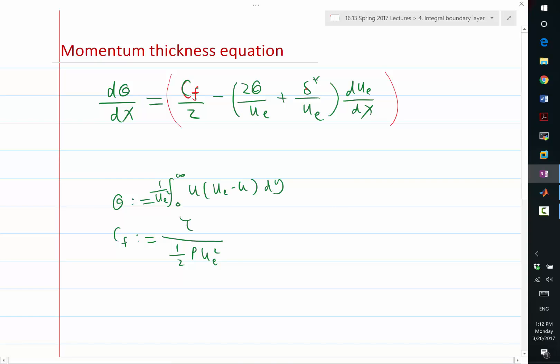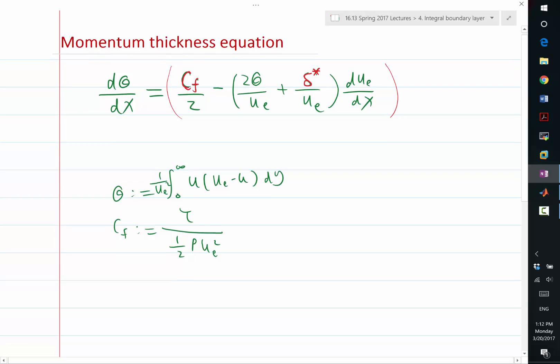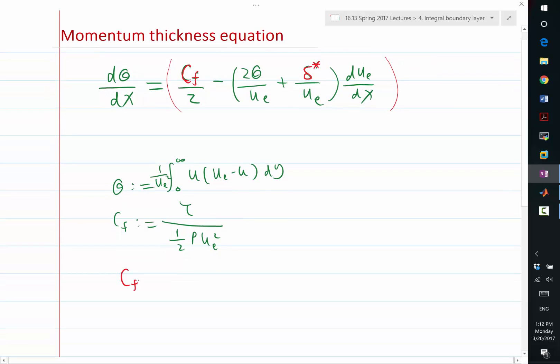The second unknown term is delta star. Delta star also needs to be modeled as a function of x and theta somehow. So ue again is known, and duedx is known. So the task here is to model the unknown terms, CF and delta star.